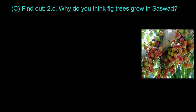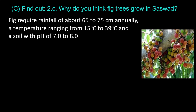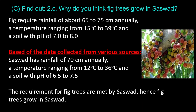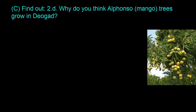Question C.2.C: Why do fig trees grow in Saswad? Fig requires rainfall of about 65 to 75 centimeters annually, a temperature ranging from 15 to 39 degrees Celsius, and a soil pH of 7.0 to 8.0. Based on data collected from various sources, Saswad has rainfall of 70 centimeters annually, a temperature ranging from 12 to 36 degrees Celsius, and a soil pH of 6.5 to 7.5. The requirements for fig trees are met by Saswad, hence fig trees grow in Saswad.